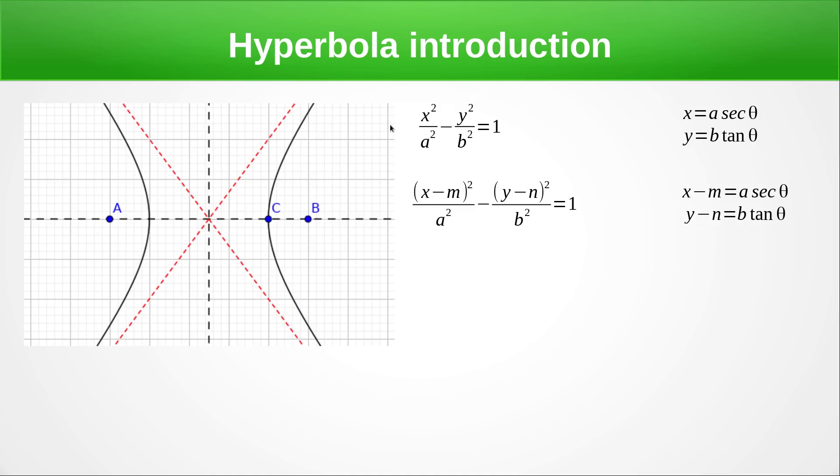This is the general form, very similar to an ellipse, but we have a negative instead of a positive. And here we have sec instead of cos and tan instead of sine. And again, the same difference is going on here.